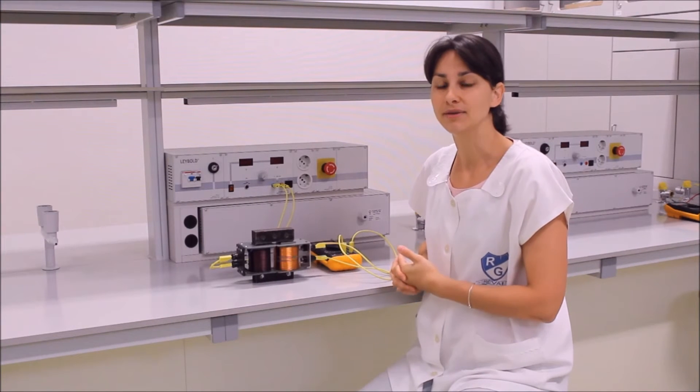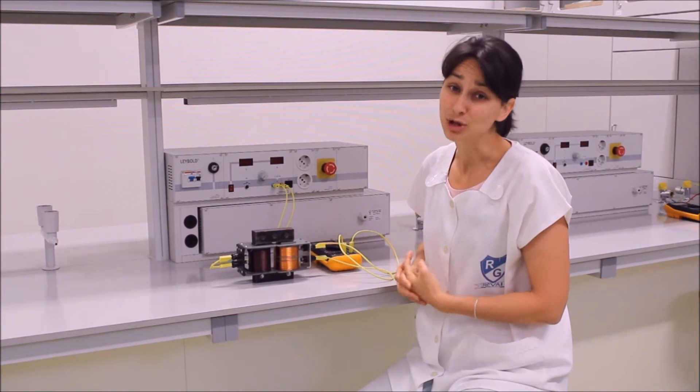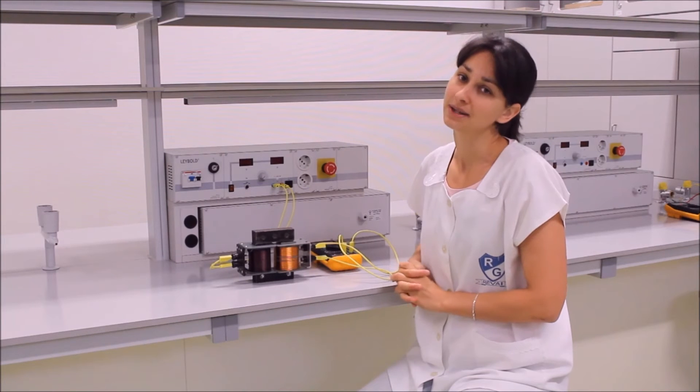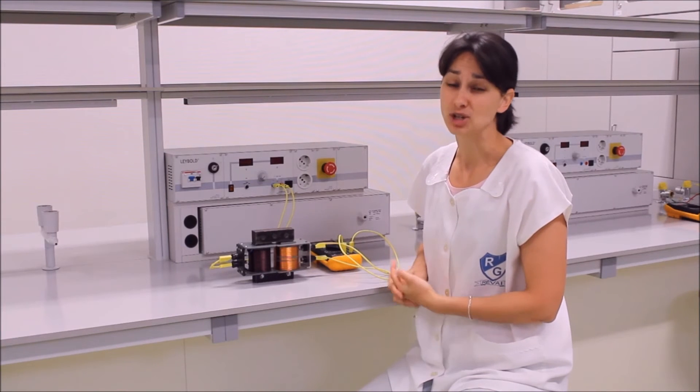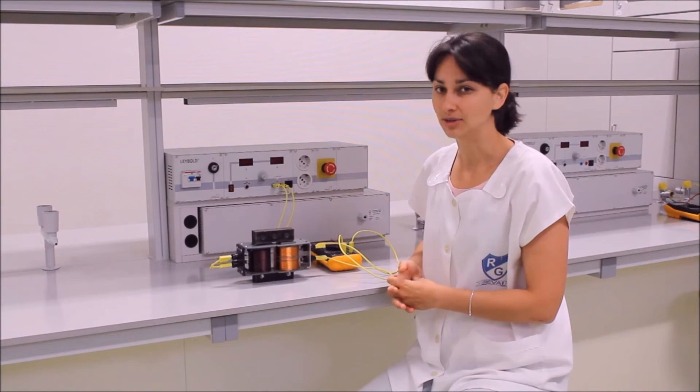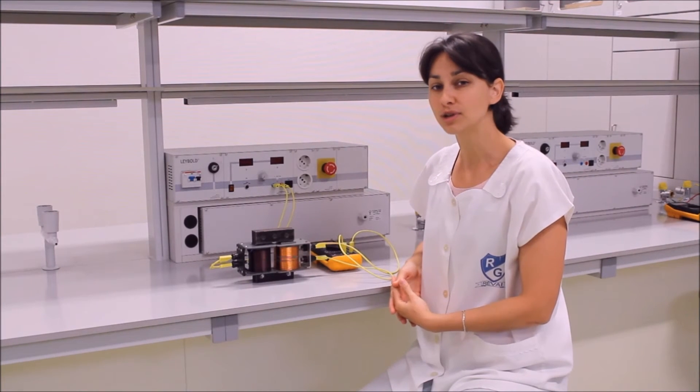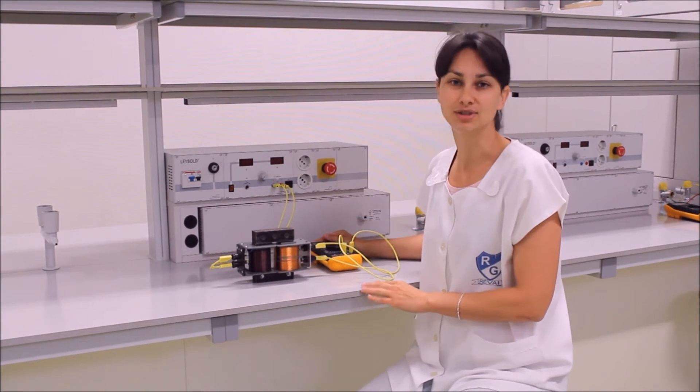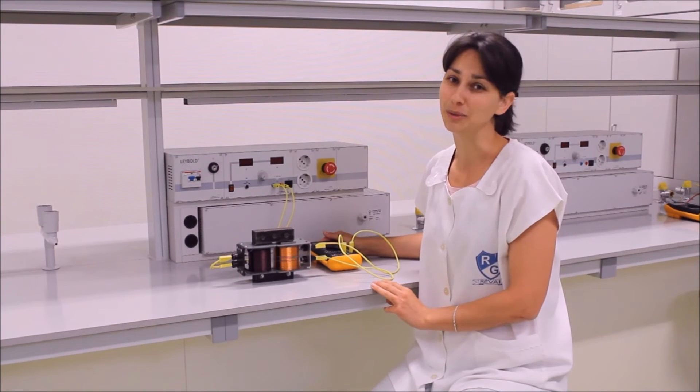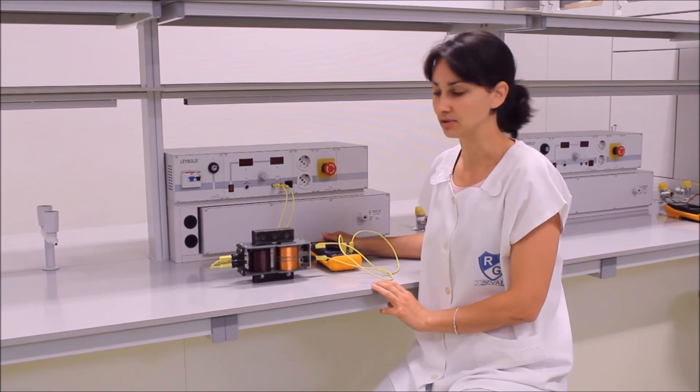Tehát a primer és a szekunder feszültség hányadosa megegyezik a primer tekercs menet számának és a szekunder tekercs menet számának hányadosával. Ez volt a feltranszformálás, tehát nagyobb feszültséget vettünk le a szekunder tekercsről, mint amennyit a primer tekercsre kapcsoltunk.